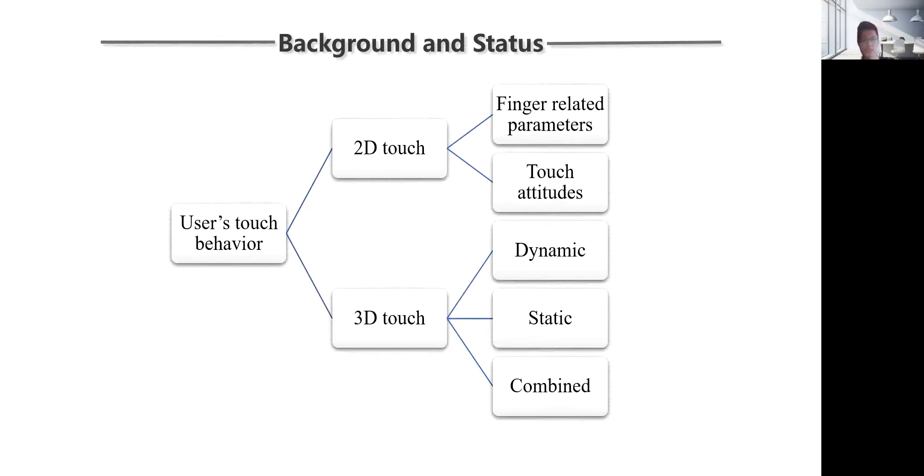To present, the user's touch behavior can be divided into two- and three-dimensional touch. Factors affecting two-dimensional force touch include finger-related parameters and touch attitudes. And in three-dimensional touch events, two types are mainly involved, which are dynamic and static force touches.